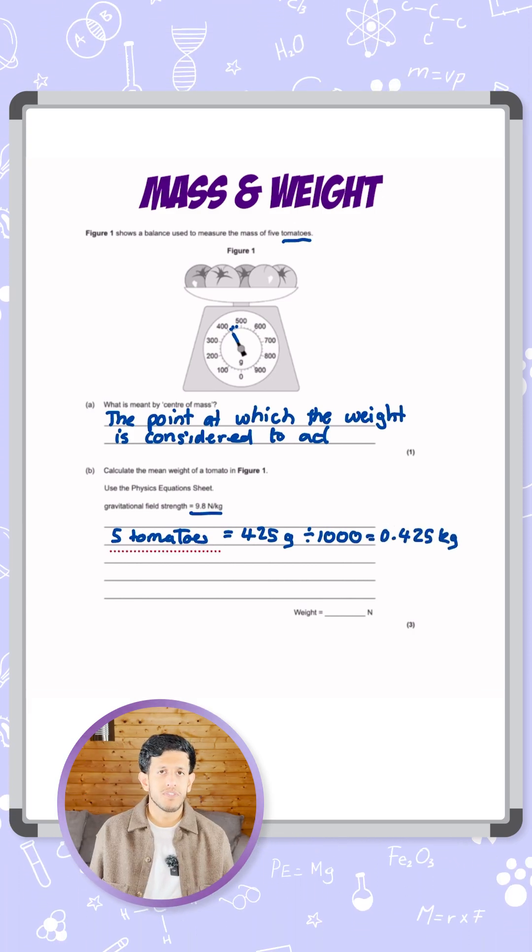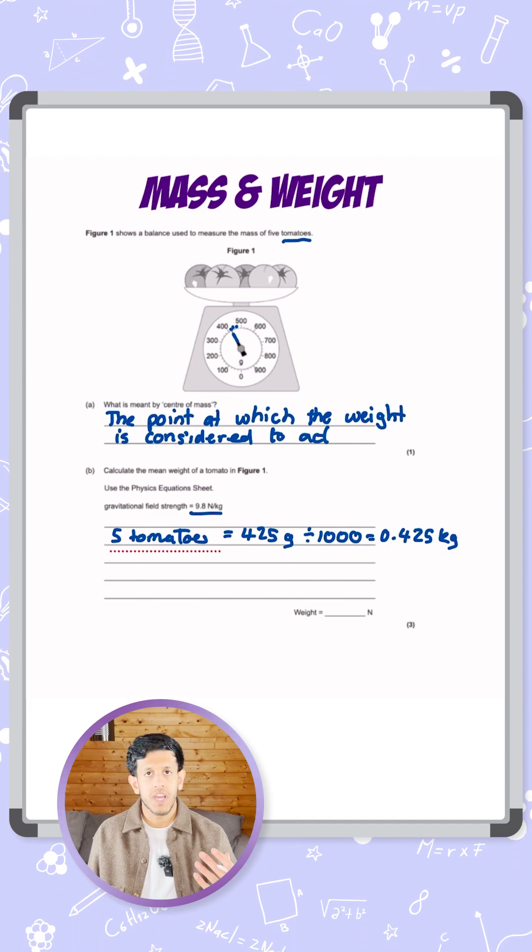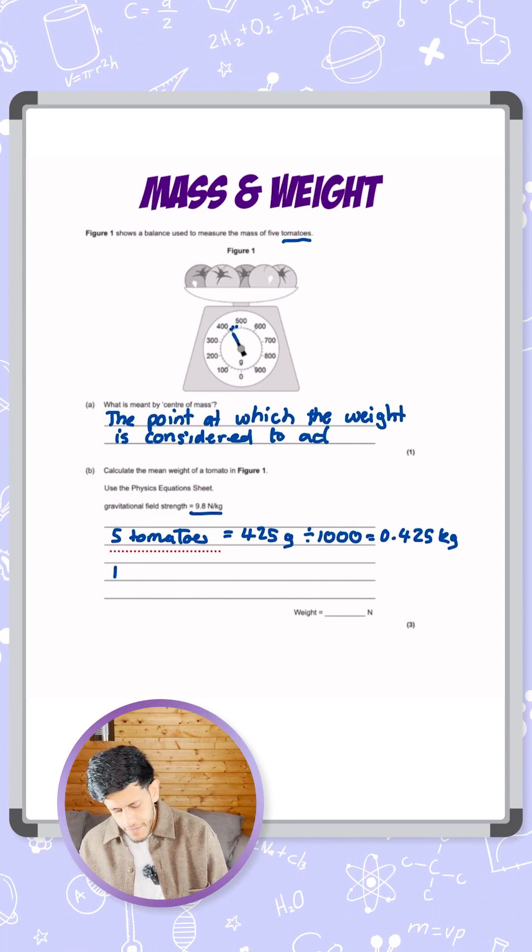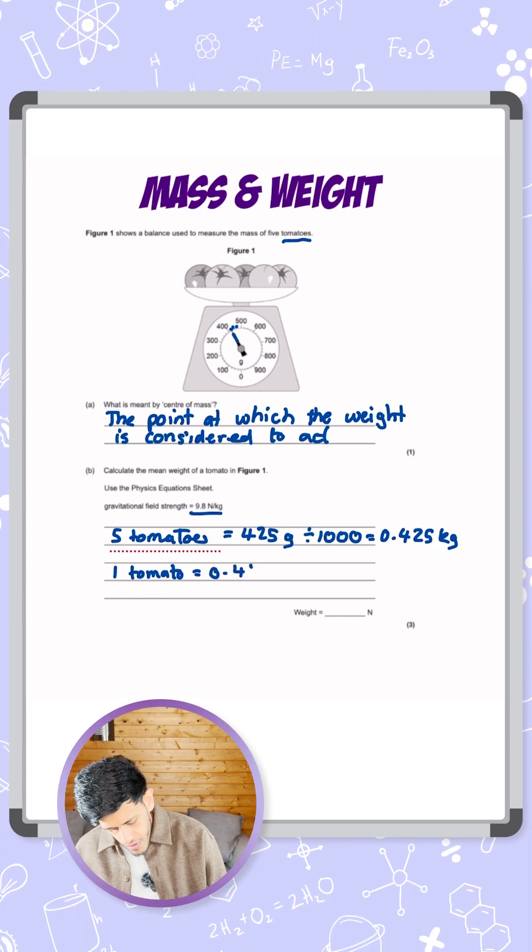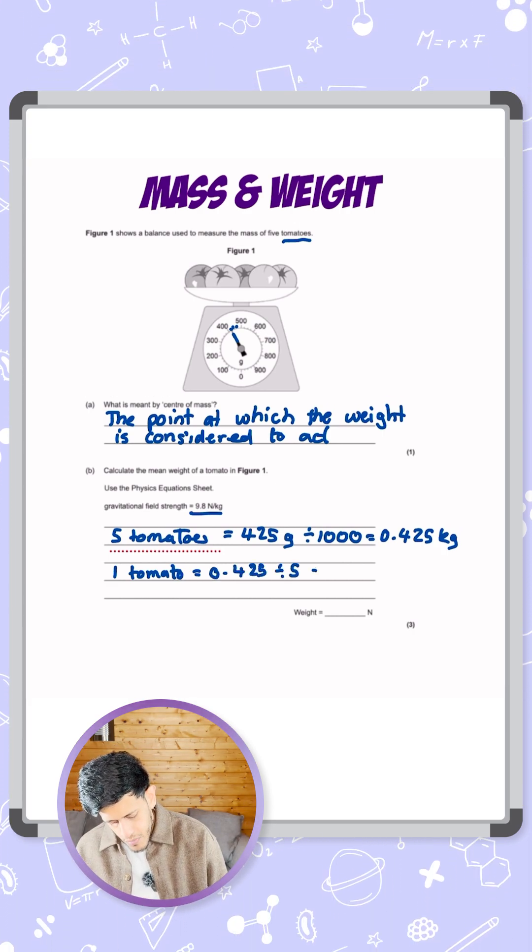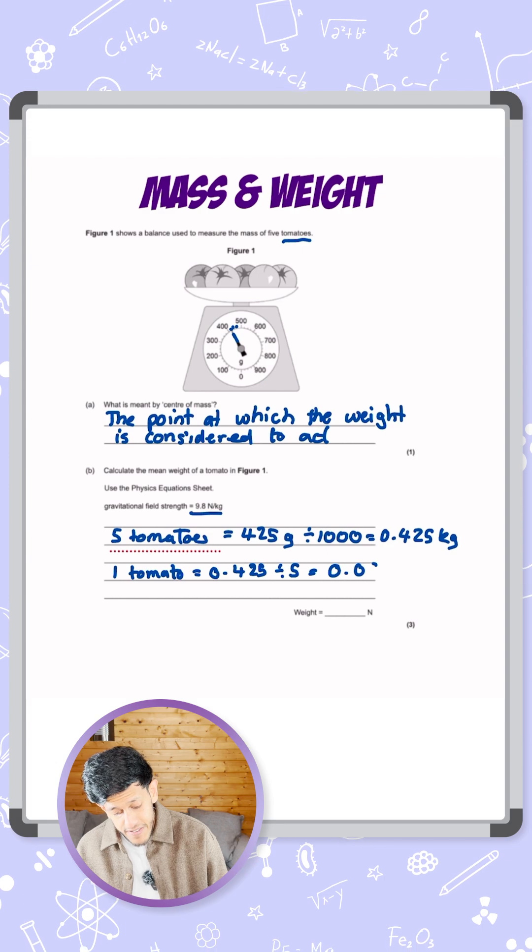That's for five tomatoes - we want it for one so that we can work out the weight of one of them. So we just need to divide by five. One tomato is 0.425 divided by 5, which is 0.085 kilograms.